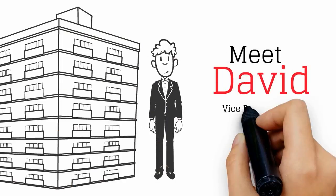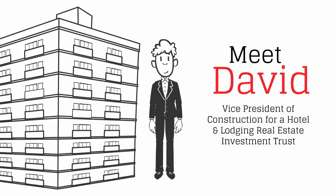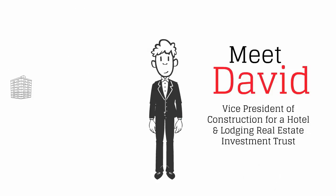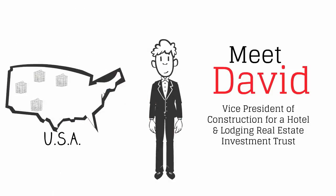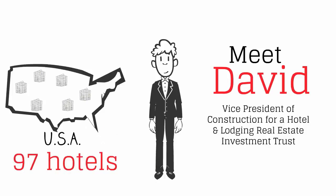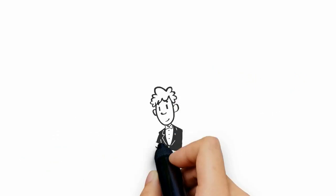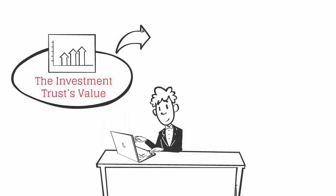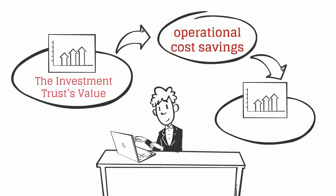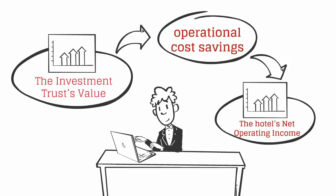Meet David. David is the new Vice President of Construction for a Hotel and Lodging Real Estate Investment Trust. He's in charge of capital expense projects for their 97 hotels across the U.S. To increase the investment trust value, David knows that a good place to find operational cost savings is within a hotel's monthly utility expenses. He knows that any savings in operational expenses increases the hotel's net operating income and has a significant effect on its asset value.